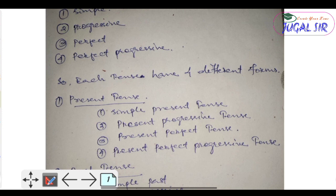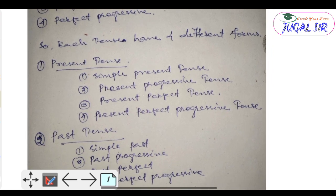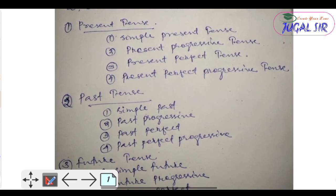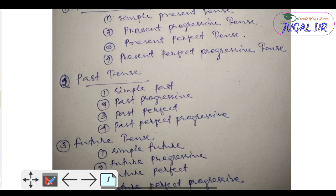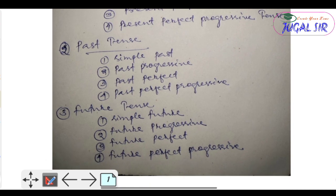Each tense has four different forms. In the present tense: simple present, present progressive, present perfect, and present perfect progressive. In the past tense: simple past, past progressive, past perfect, and past perfect progressive. In the future tense: simple future, future progressive, future perfect, and future perfect progressive. Today's class is finished.